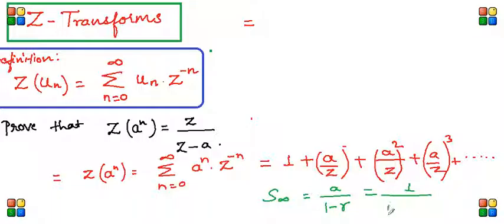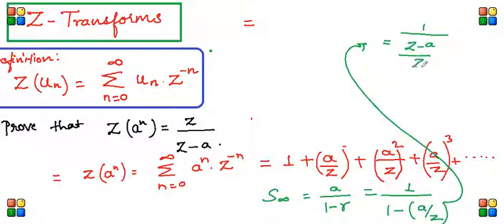And this is 1 minus r, where r is a/z. So finally we can write it as 1 divided by (1 - a/z). This z comes to the top, and it becomes z/(z-a).